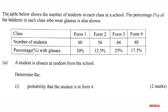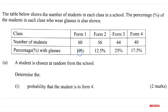The question says the table below shows the number of students in each class in a school. The percentage of the students in each class who wear glasses is also shown. We have the number of students from Form 1, Form 2, Form 3, Form 4, and 10% of 60 students are wearing glasses and so on.